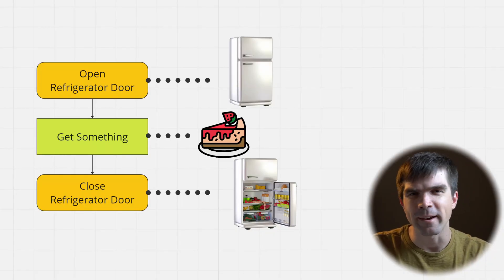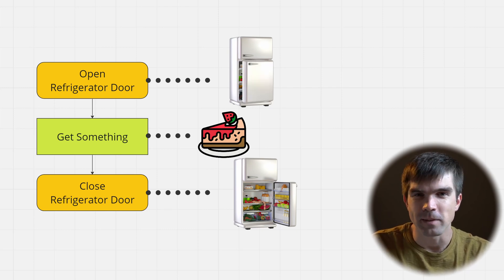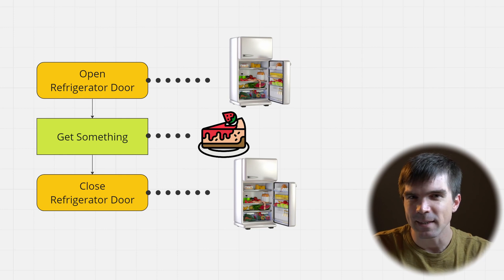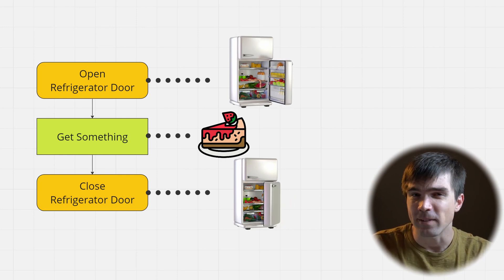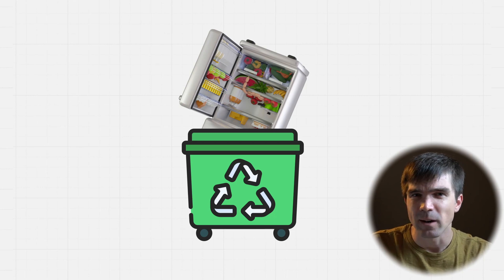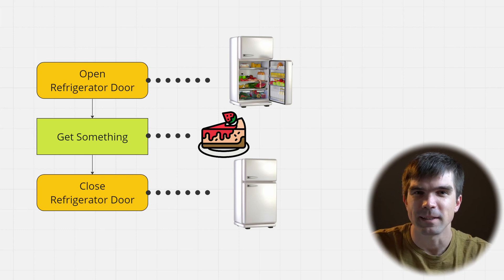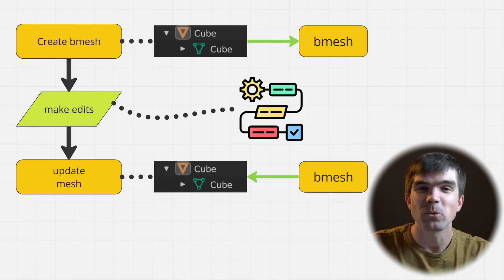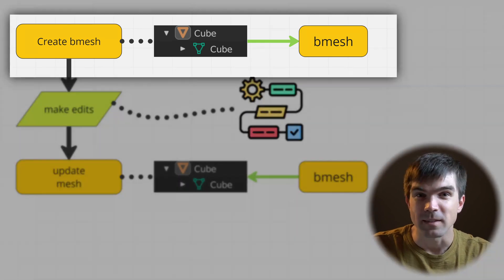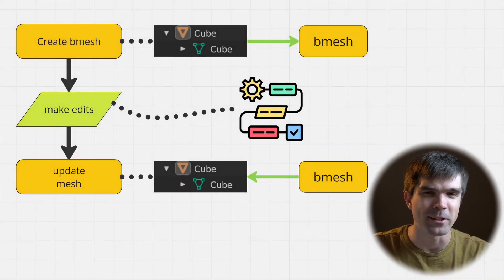Here's where the refrigerator analogy comes in: when you want to get something from the refrigerator or put something back, you need to first open the door, take something out or put something back in, and then not forget to close the door. If you forget to close it, you might end up with a broken refrigerator. Similarly with mesh editing, you do the setup first, perform your operation, and then run the final commands that apply your edits.